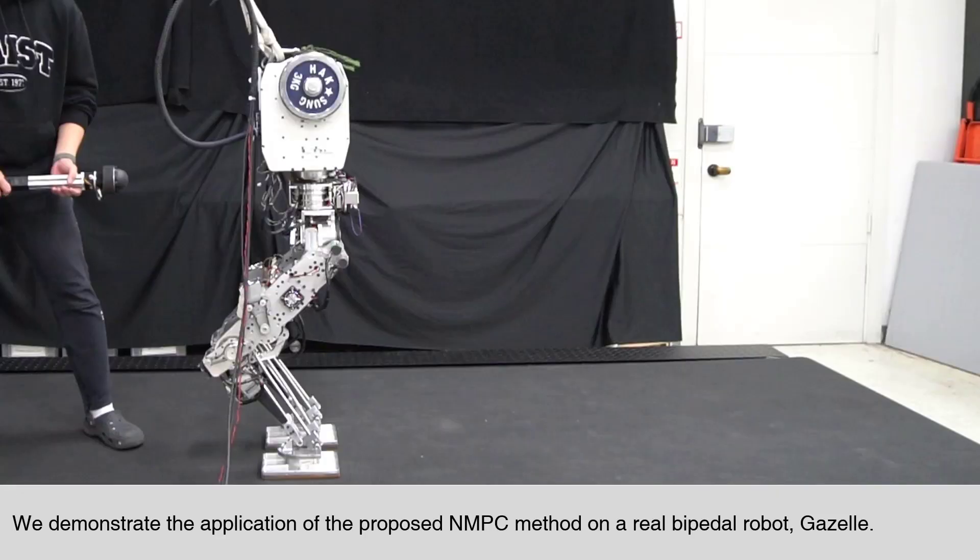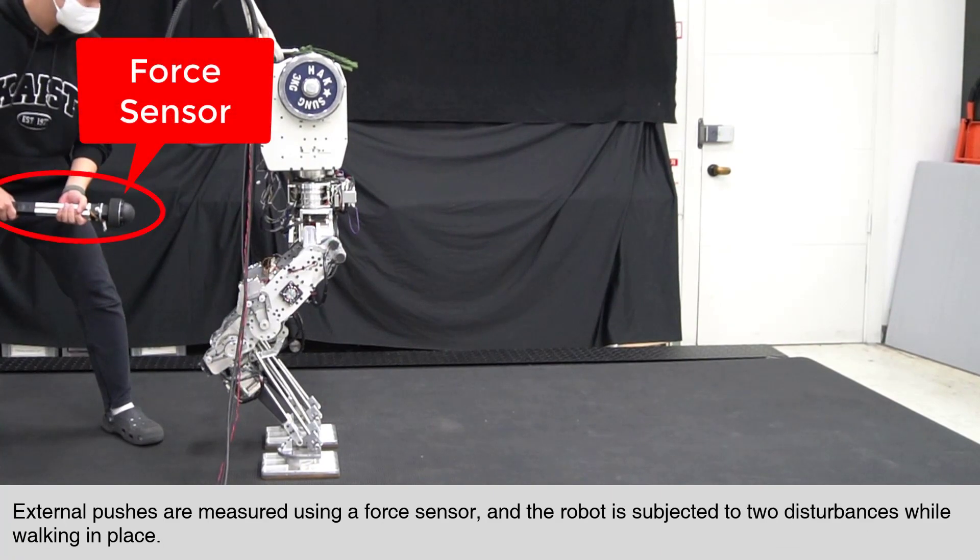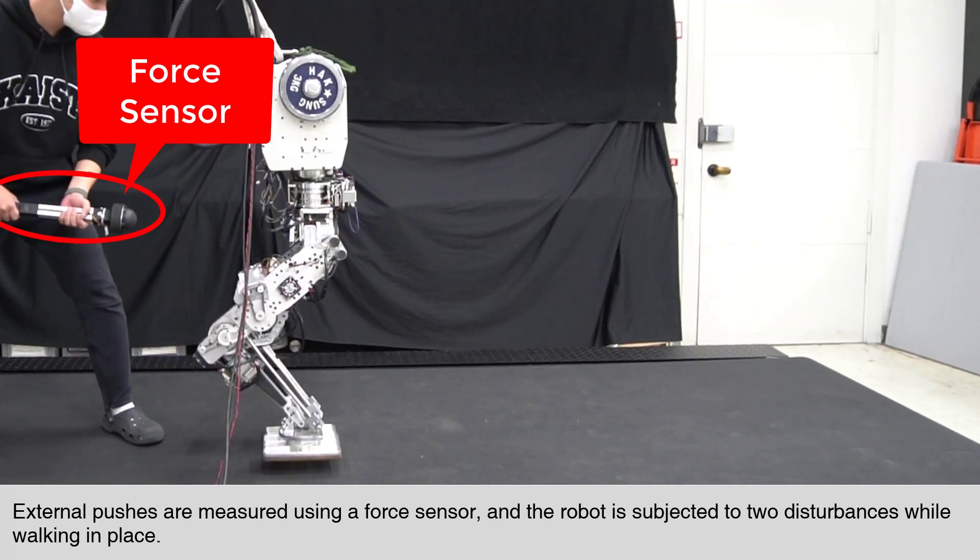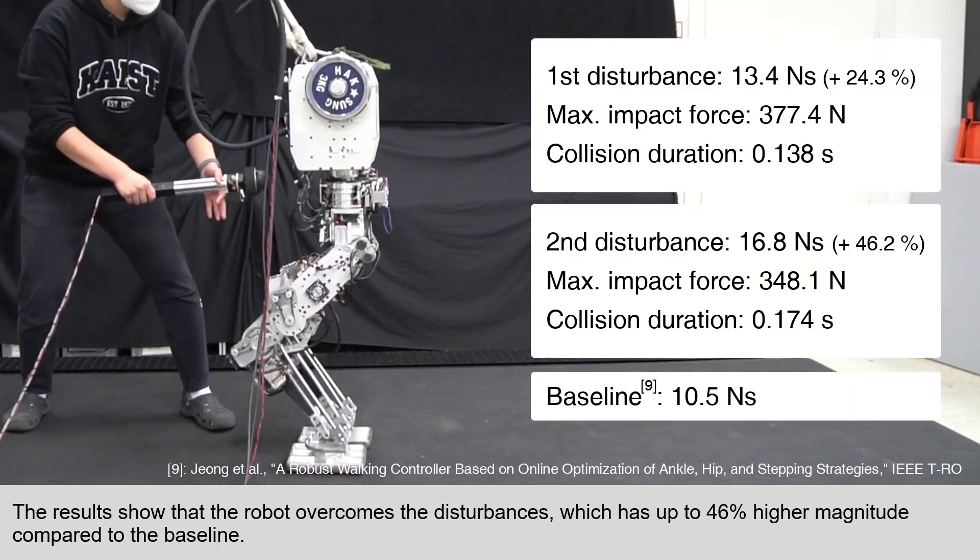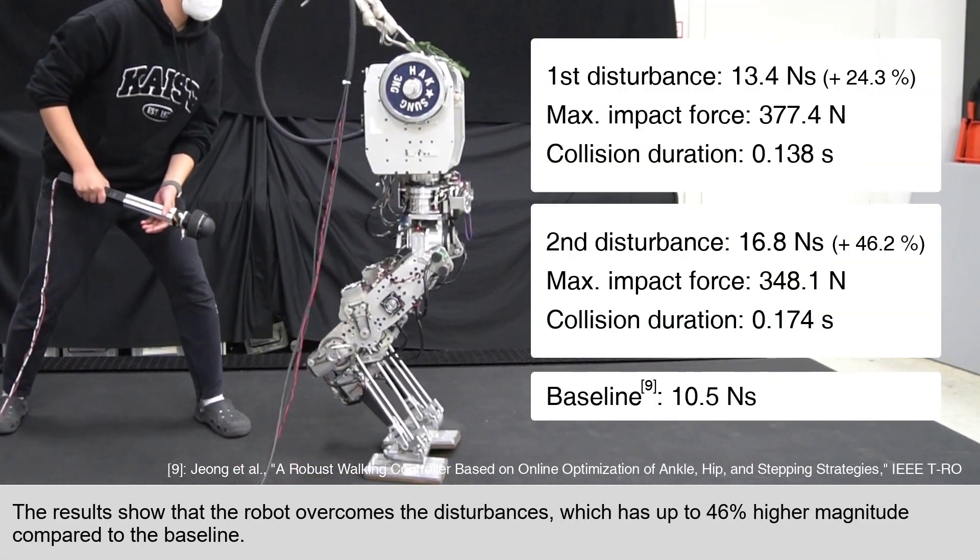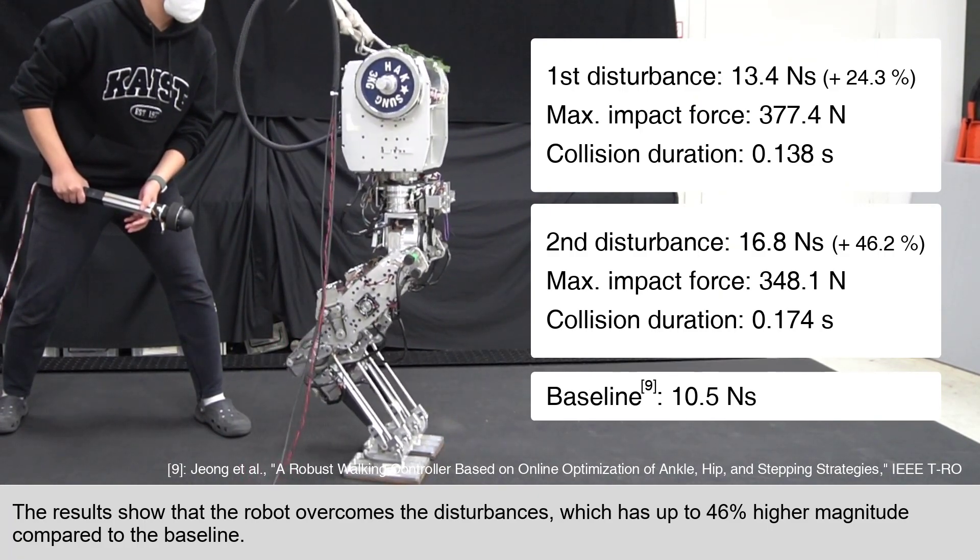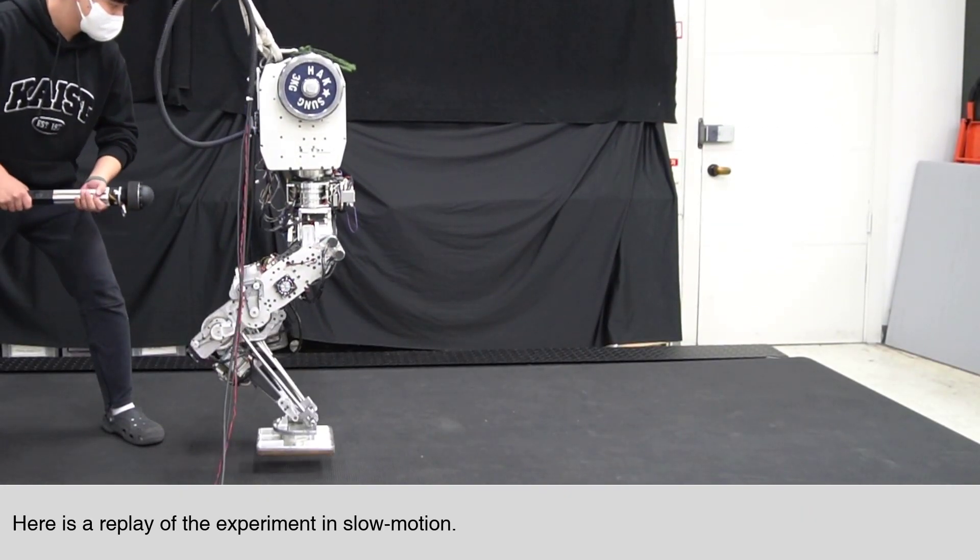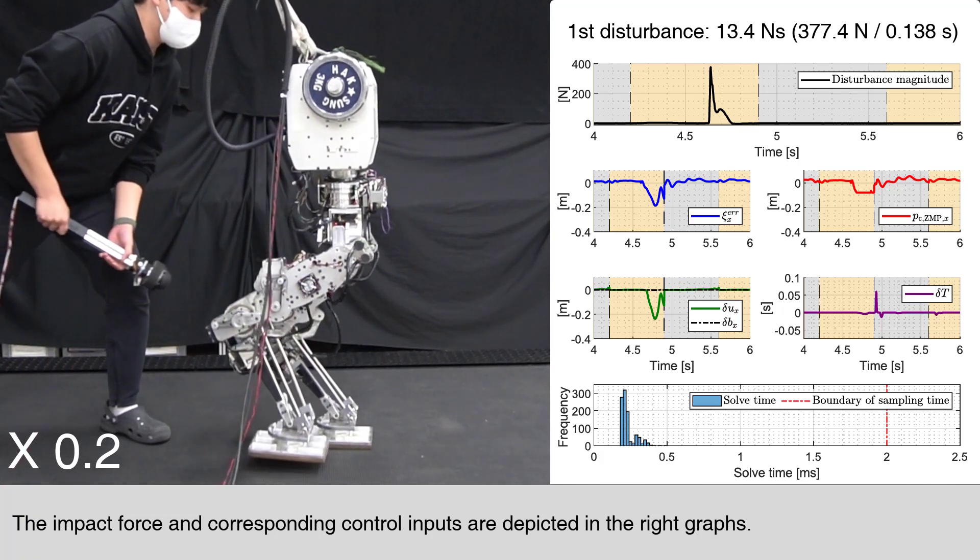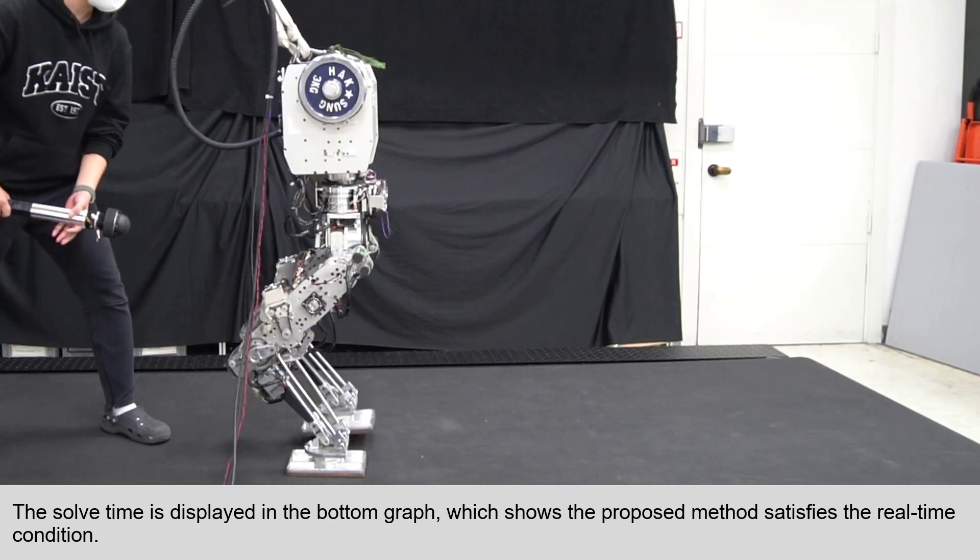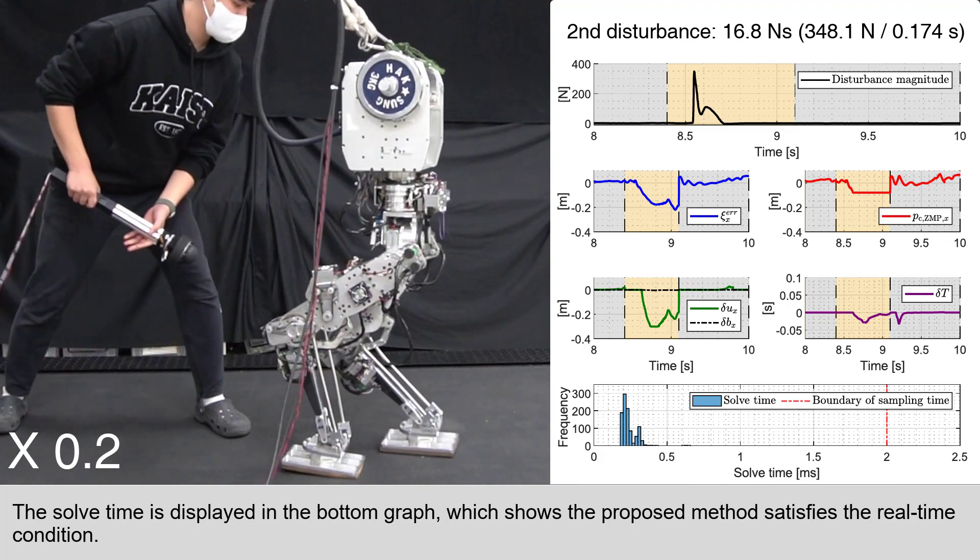We demonstrate the application of the proposed NMPC method on a real bipedal robot, Gazelle. External pushes are measured using a force sensor, and the robot is subjected to two disturbances while walking in place. The results show that the robot overcomes the disturbances, which has up to 46% higher magnitude compared to the baseline. Here is a replay of the experiment in slow motion. The impact force and corresponding control inputs are depicted in the right graphs. The solve time is displayed in the bottom graph, which shows the proposed method satisfies the real-time condition.